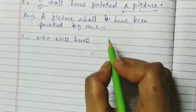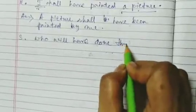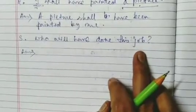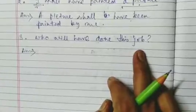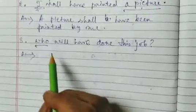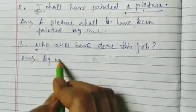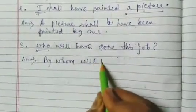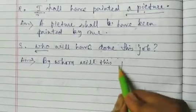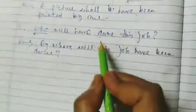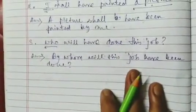Who will have done this? This is an interrogative sentence. When we are making it passive, we used 'whom', so when making it a passive interrogative, we have to use 'by whom' at the beginning. By whom will this job have been done? This is the interrogative form of future perfect tense.